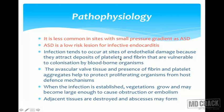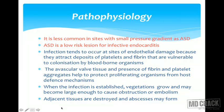Infection tends to occur at sites of endothelial damage because they attract deposits of platelets and fibrin that are vulnerable to colonization by bloodborne organisms. The avascular valve tissue and the presence of fibrin and platelet aggregates help protect proliferating organisms from host defense mechanisms. When infection is established, vegetation grows and may become large enough to cause obstruction or embolism, and adhesion tissues are destroyed and abscesses may form.